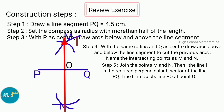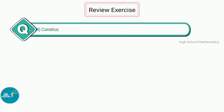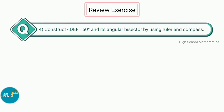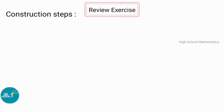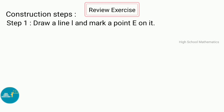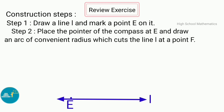Question number 4: Construct angle DEF equal to 60 degrees and its angular bisector using ruler and compass. Step 1 — draw a line L and mark a point E on it. Step 2 — place the pointer of the compass at E and draw an arc of convenient radius which cuts line L at point F.